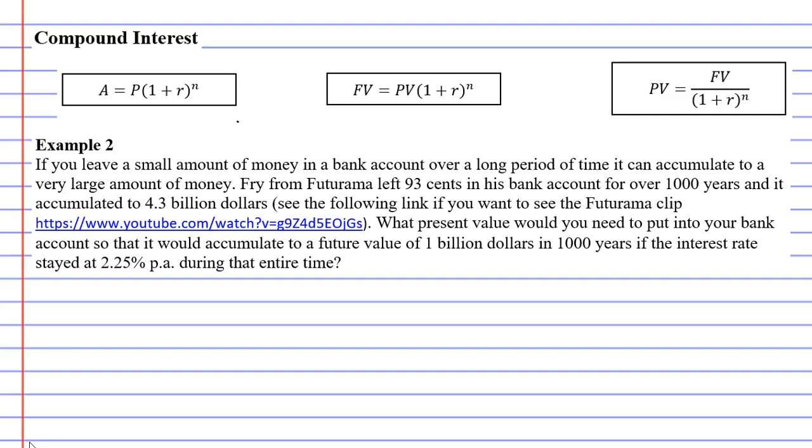Fry from Futurama left 93 cents in his bank account for over a thousand years. It ends up accumulating to $4.3 billion. Now, I've actually got a YouTube link there that you can look at if you're interested in seeing the clip from the show.